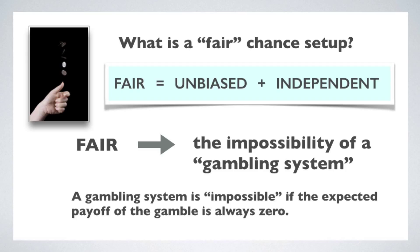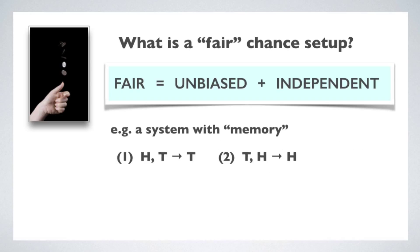Now it can be helpful to see an example of a system that does permit a gambling system. Imagine a chance setup with coins where there's memory in the system. Specifically, the system remembers when you have a head followed by a tail — when that happens, the next toss is always a tail. That's rule number one. And it remembers when you have a tail followed by a head — when that happens, the next toss is always a head. If the system has this kind of memory, then you can implement a betting system that always wins.